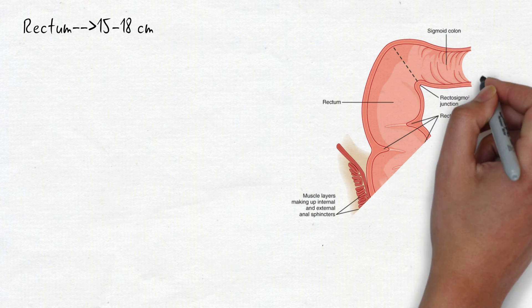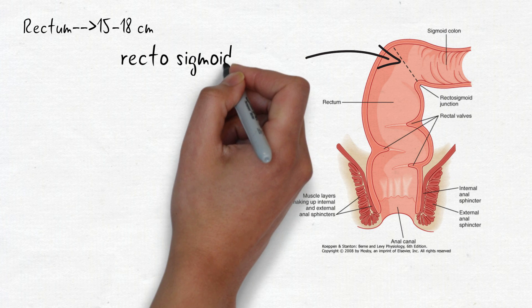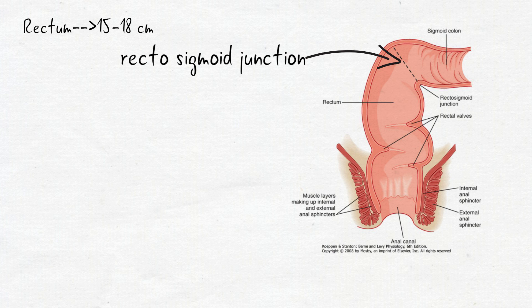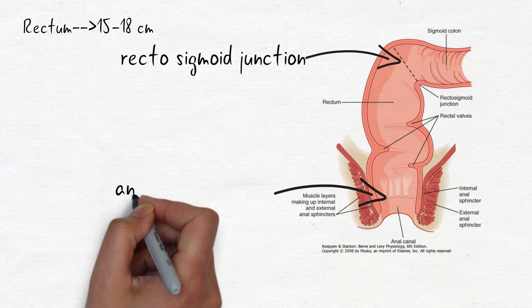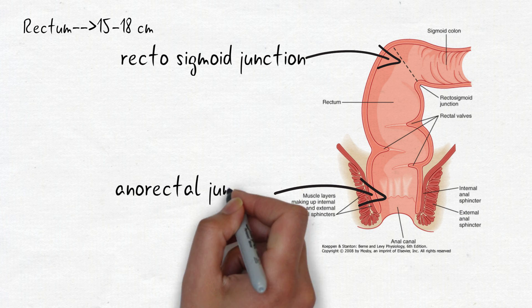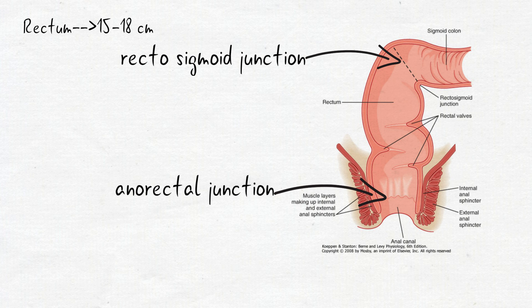Rectum is 15 to 18 cm in length. Rectum starts at rectosigmoidal junction opposite to S3 and descends down to the pelvic floor and ends at anorectal junction which is 4 cm away from the anal verge. Anorectal junction is enclosed by puborectalis muscle posteriorly and in lateral aspects.